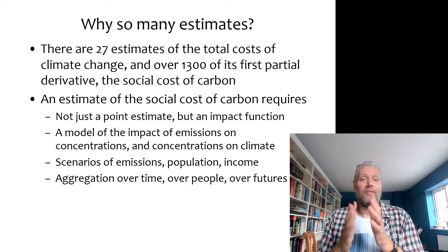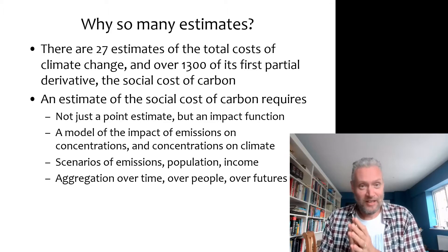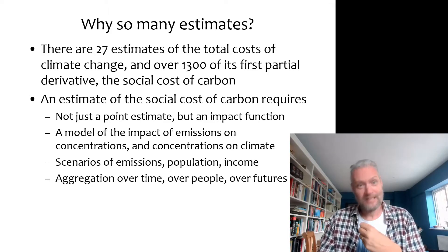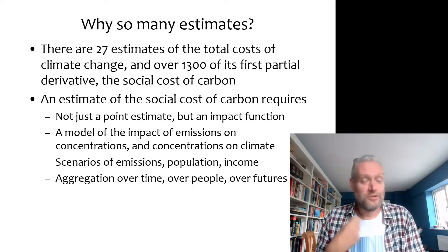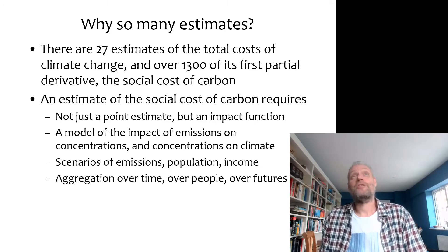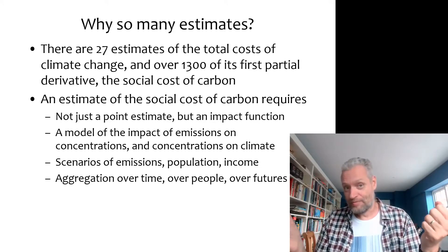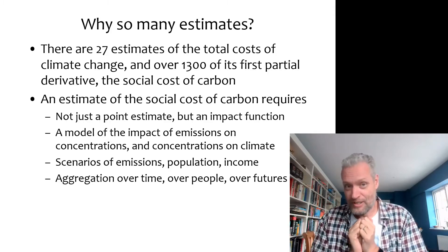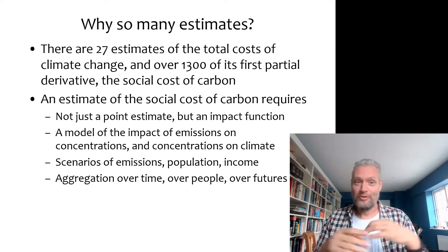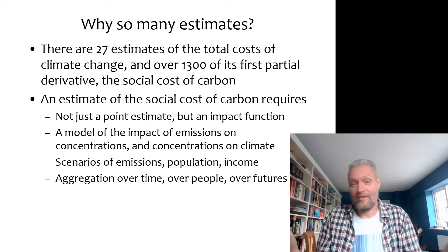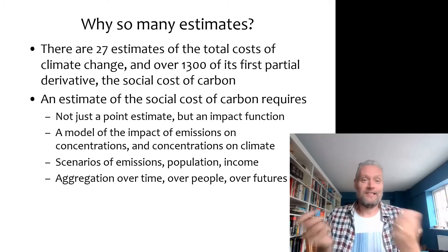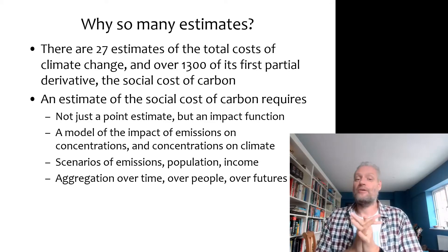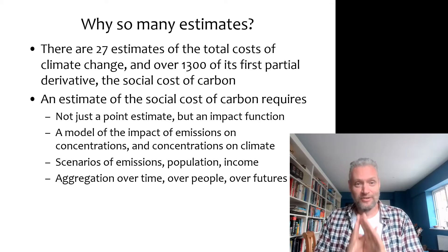And then finally, the social cost of carbon is a net present value — an aggregate over a stream of incremental impacts discounted to today. So your choice of discount rate matters. But also, those impacts fall on people across the world, so it matters how you aggregate over people and across countries. Of course there's a lot of uncertainty about the future, so you would want many alternative futures in your model, and then somehow aggregate or average across those scenarios. This introduces a lot of additional degrees of freedom.